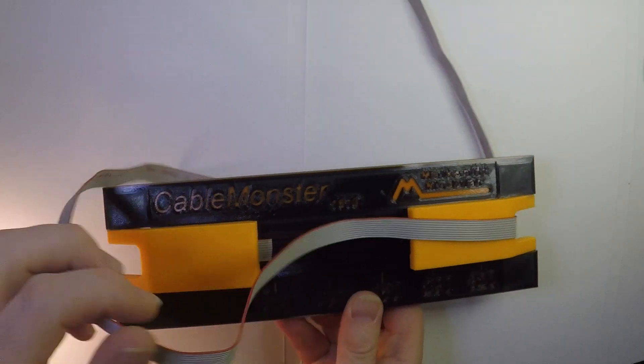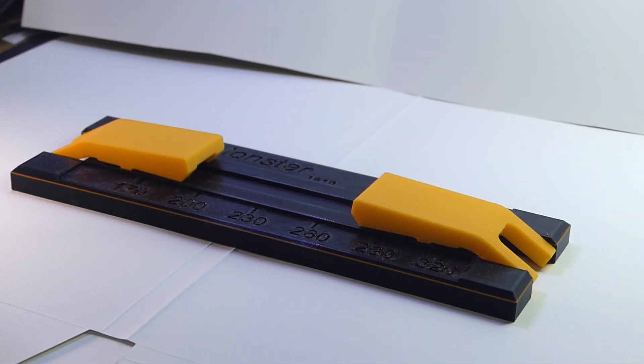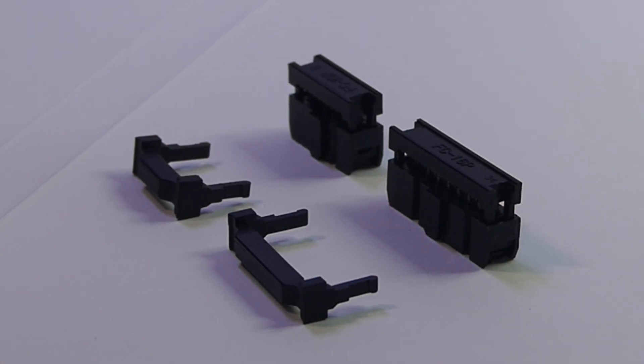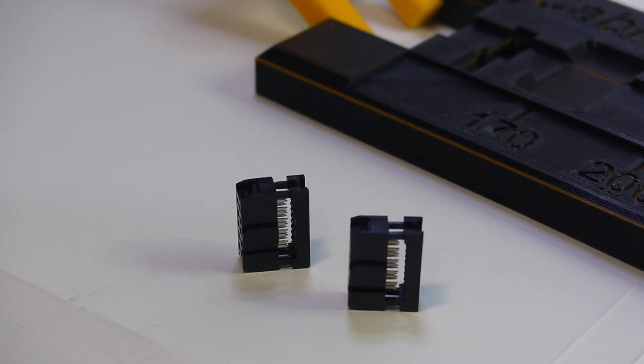Featuring a compact and lightweight form factor, the CableMonster is 3D printed in durable PETG and ABS using standard crimp connectors and ribbon cable.